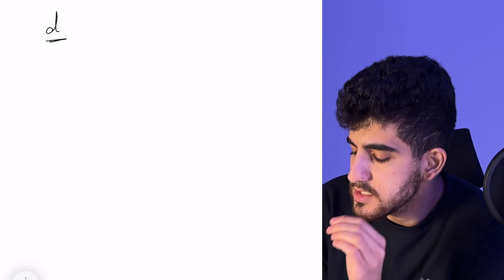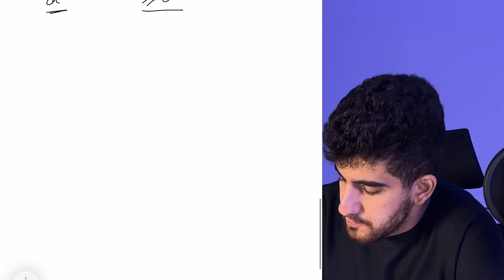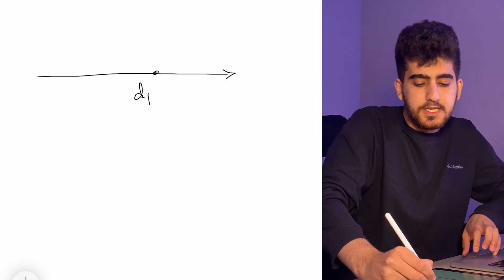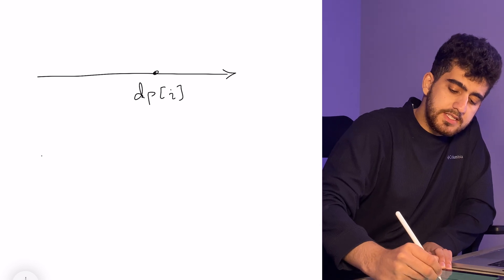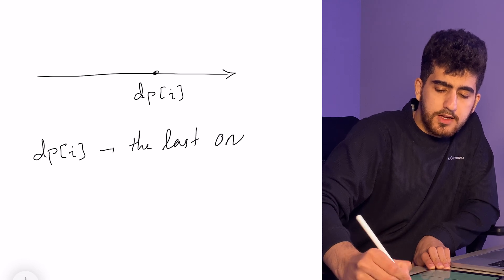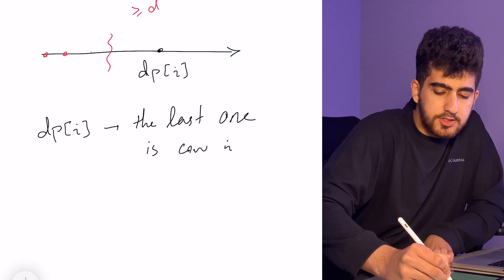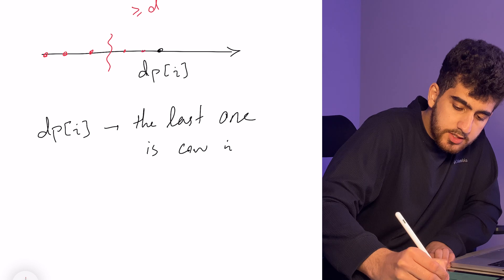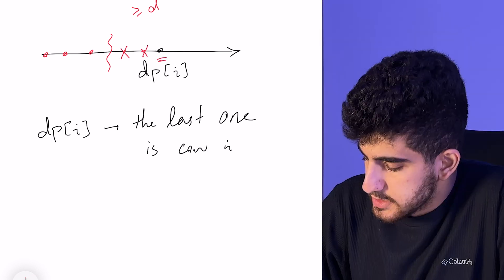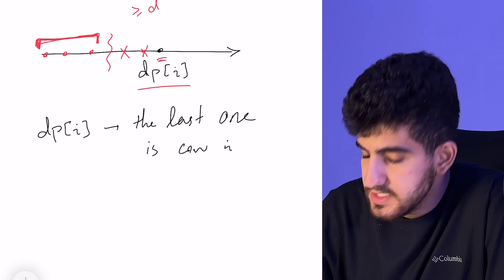We want to maximize our minimum and we start to think about binary search. Assume we fix some value d and we want our minimum to be greater than or equal to d, which means that all our numbers should be greater than or equal to d. For each cow, I want to have a dp, dp of i. dp of i means what is the maximum number of cows that I can choose if the last one is cow number i. I have to find out what is the maximum dp in this part, and dp of i will be the maximum of these dps plus one.